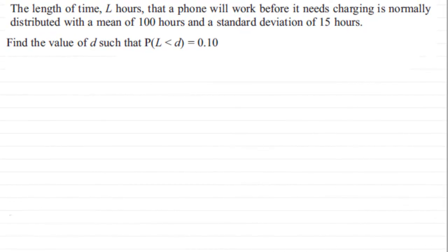Hi, now here we have an example where we've got to find a particular observation value from a normal distribution. In this example, the length of time L hours that a phone will work before it needs charging is normally distributed with a mean of 100 hours and a standard deviation of 15 hours.